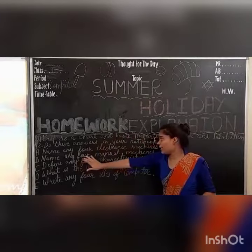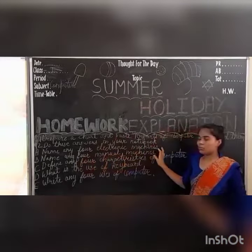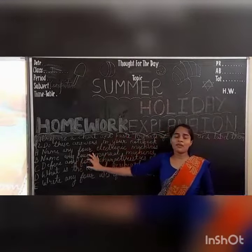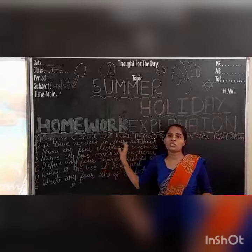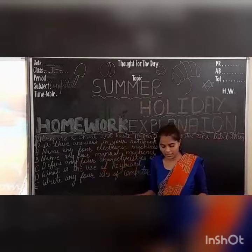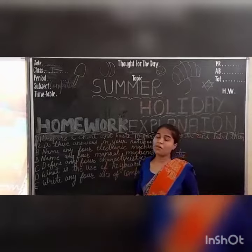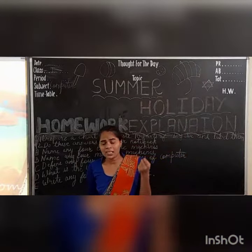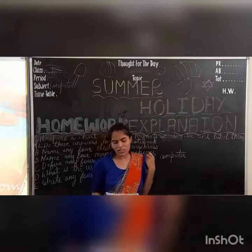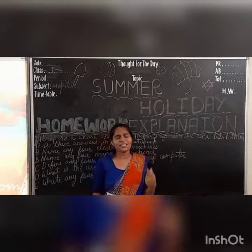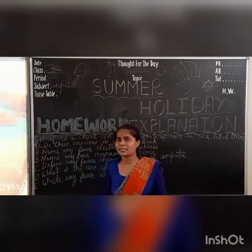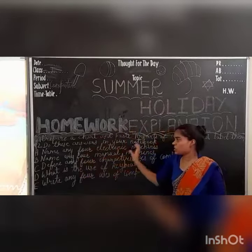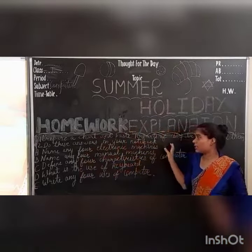The second question asks you to name four manual machines. Manual machines can be: cycle, sewing machine, typewriter, scissors, etc. Any four manual machines that a child can think of are acceptable.